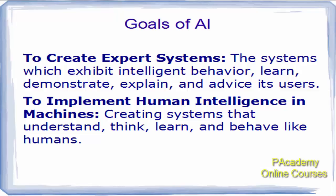What are the goals of AI? The goals are to create expert systems — systems which exhibit intelligent behaviors, systems which can learn, demonstrate what they have learned, explain what they have learned, and based on this knowledge can give advice to users. So one of the goals is to create expert systems.